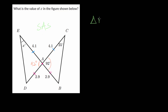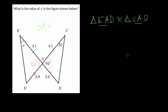We can write that triangle EAD is congruent to triangle CAB. Notice the order: we start at the top corner, go along the 4.1 side, then along the 2.9 side, and we did that in both triangles. So side length EA and CA correspond to each other. From here, we need to figure out angle E, and we can see that angle E is equal to angle C.